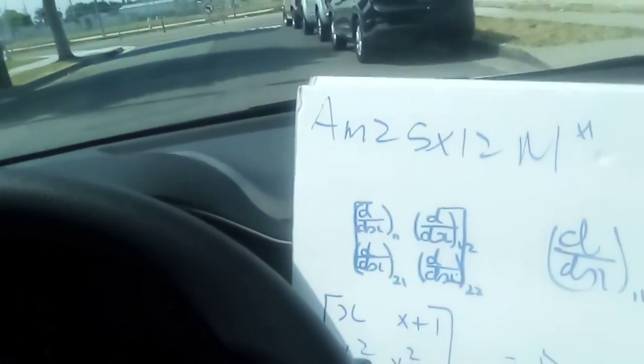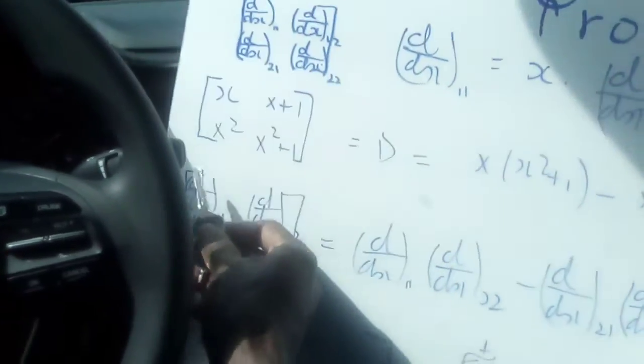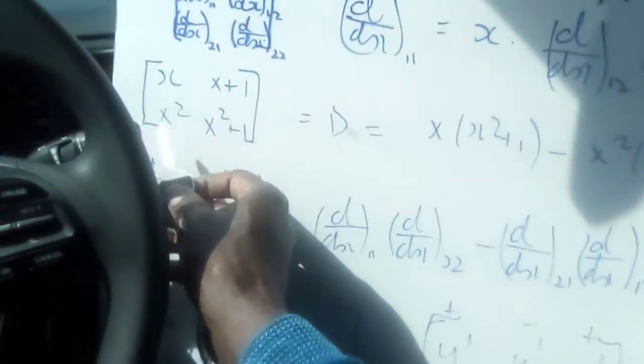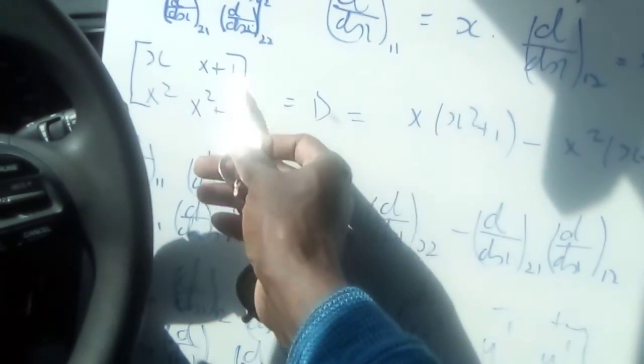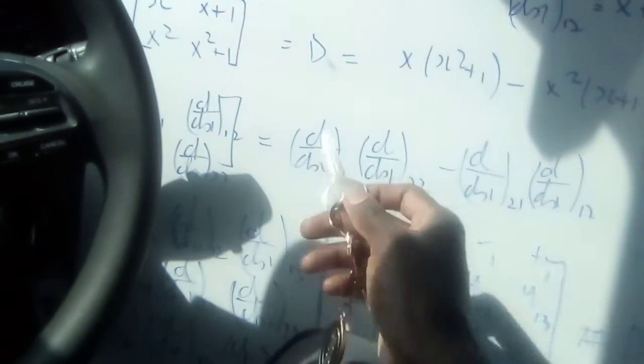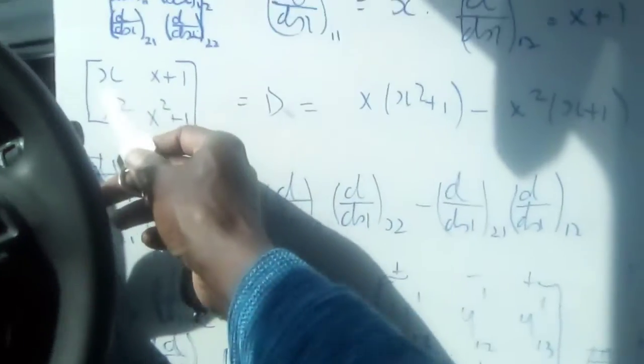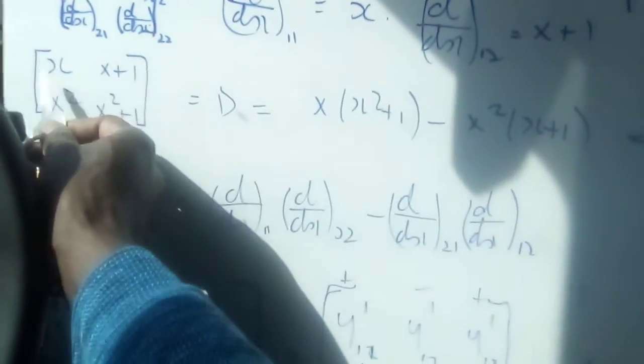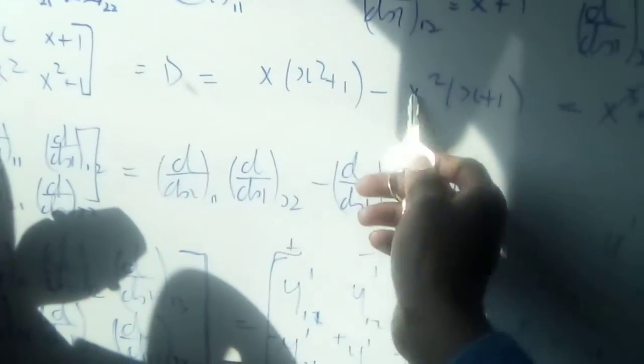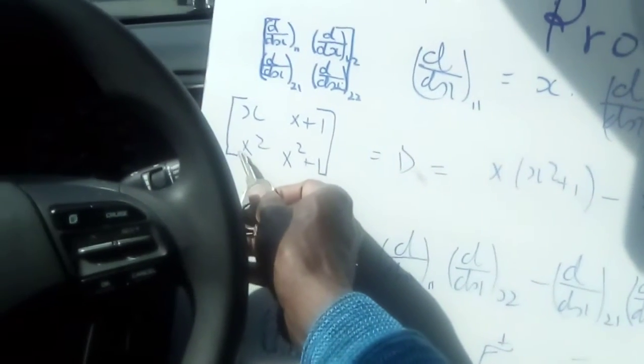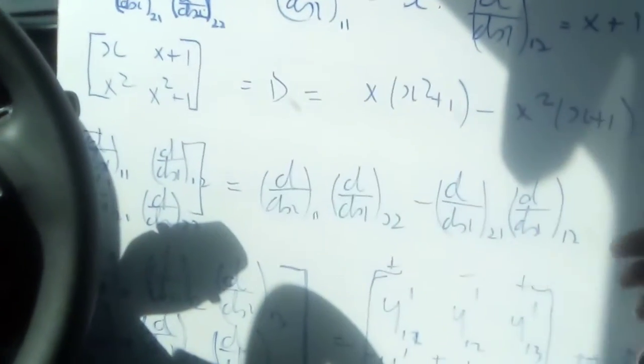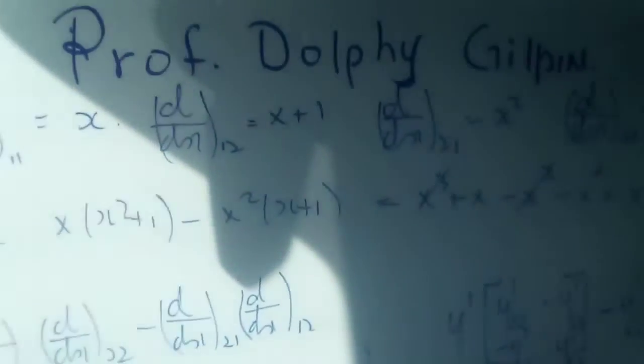So we have the values here: x, x squared, x plus 1, and x squared plus 1. We find the determinant by cross-multiplying: x times x squared plus 1 minus x squared times x plus 1. When we do that, we have x cubed plus x minus x cubed minus x squared.